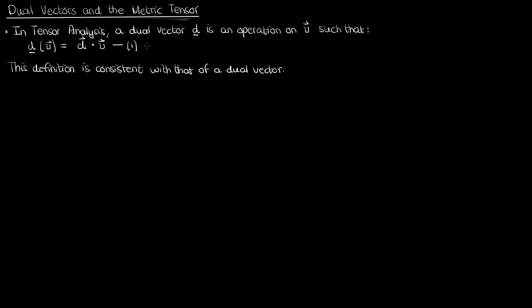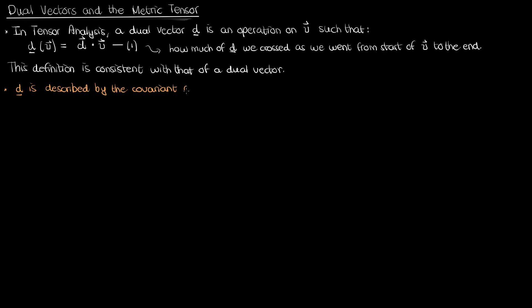In the last video I also demonstrated how intuitively a dual vector d applied to an input vector v results in a quantity that tells us how much of the dual vector d we crossed as we went from the start of the vector v to the end of the vector v. By comparing this to the gradient vector, which is a specific example of a dual vector, I concluded that a dual vector d is described by covariant vector components d sub i, where i varies from 1 to n. Typically we can write a dual vector as a row vector with the elements d sub i, and I'm using the underline to distinguish a dual vector from a regular vector, for which I'm using an arrow on top.